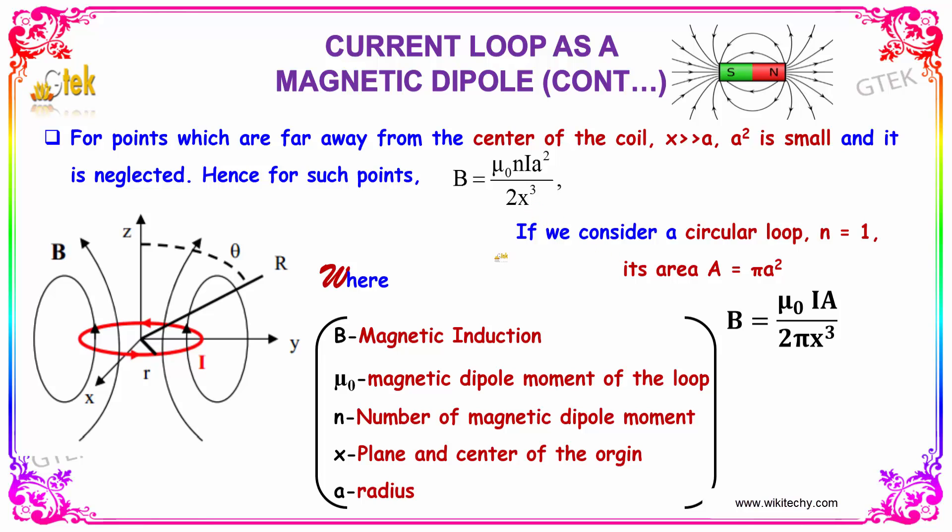If we consider a circular loop n equals 1, its area is given by A equals πa². We will be getting B equals μ₀iA divided by 2πx³.